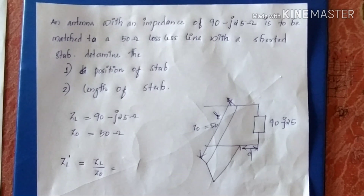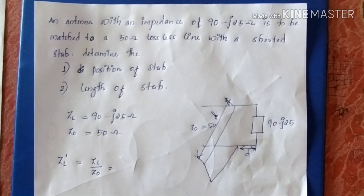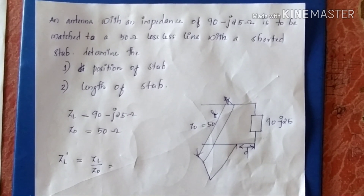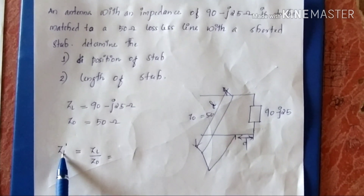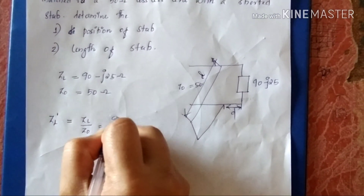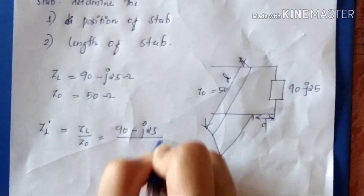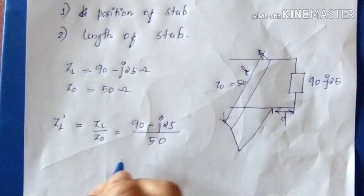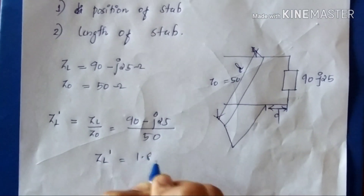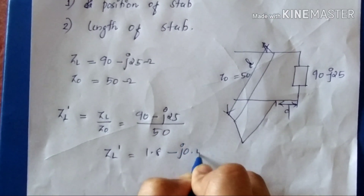The first step is to find the normalized load impedance. We are going to plot this on the Smith Chart. The normalized load impedance ZL' is equal to ZL divided by Z0, that is 90 minus j25 divided by 50, which gives ZL' equal to 1.8 minus j0.5.